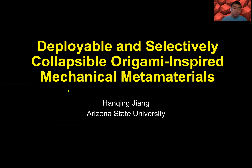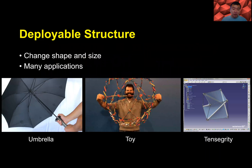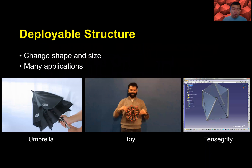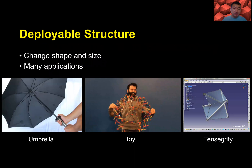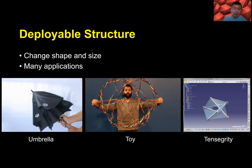This talk is about deployable and selectively collapsible origami-inspired mechanical materials. Deployable structures are structures that can change shape and size.